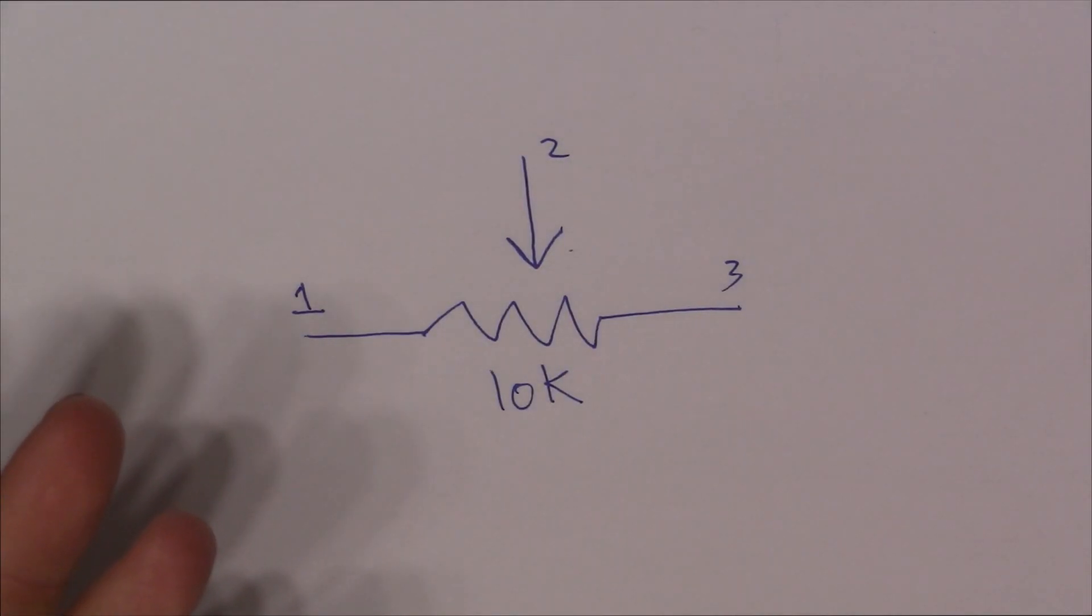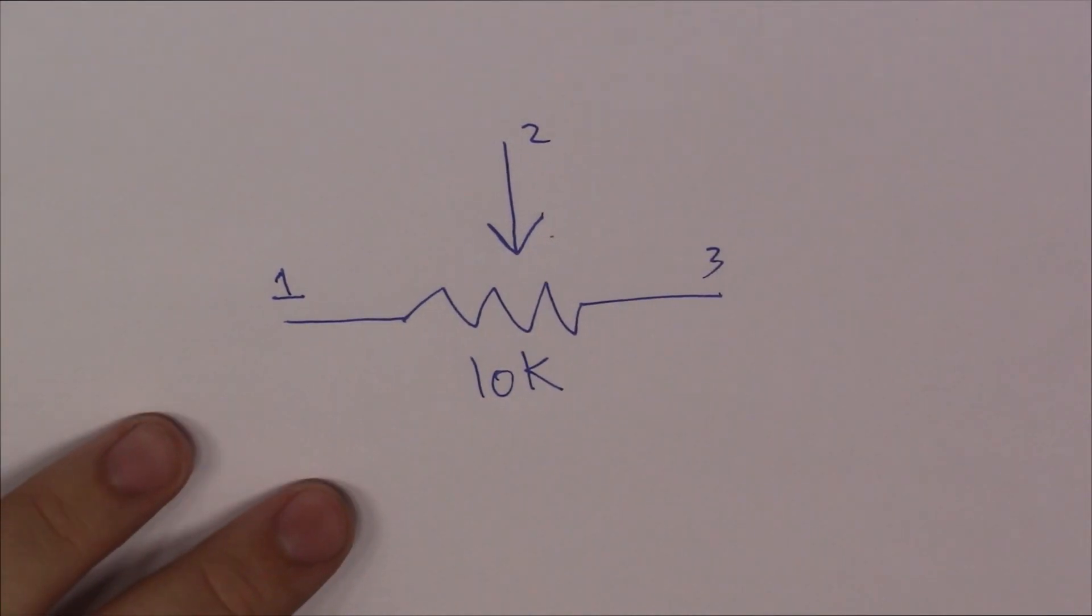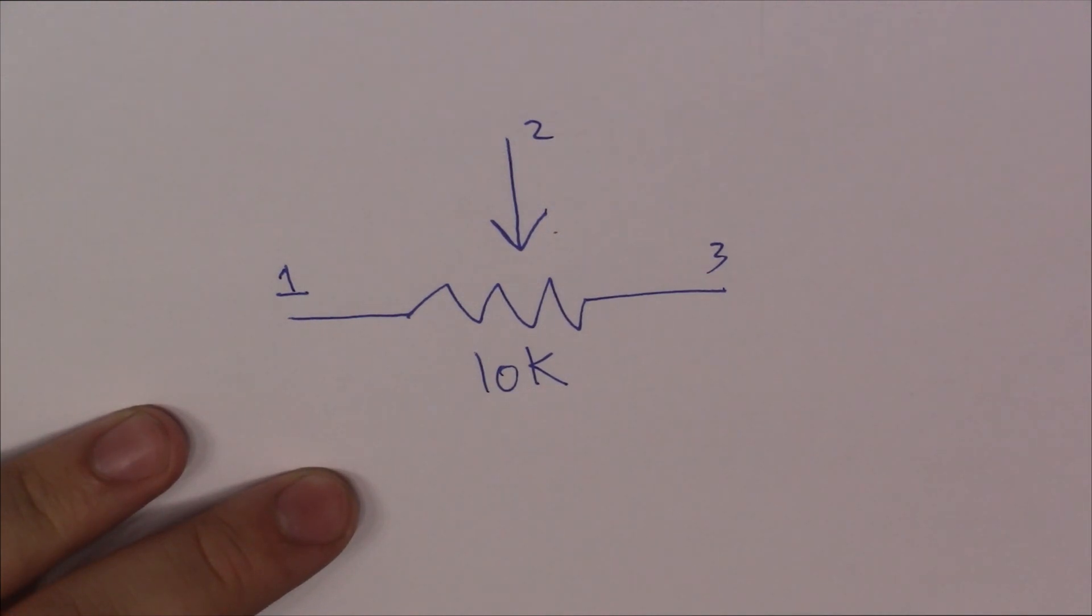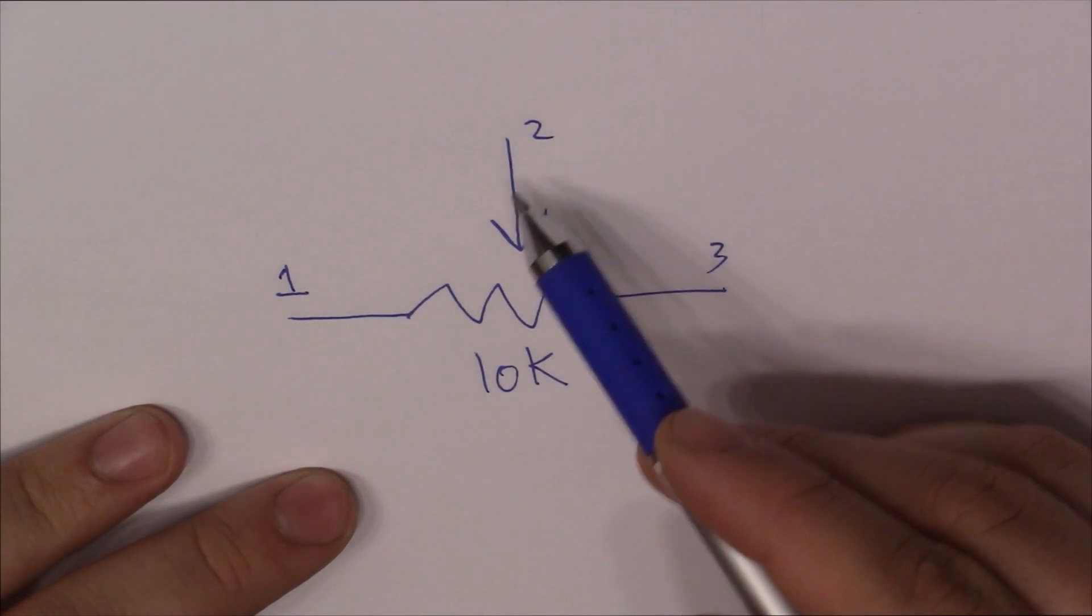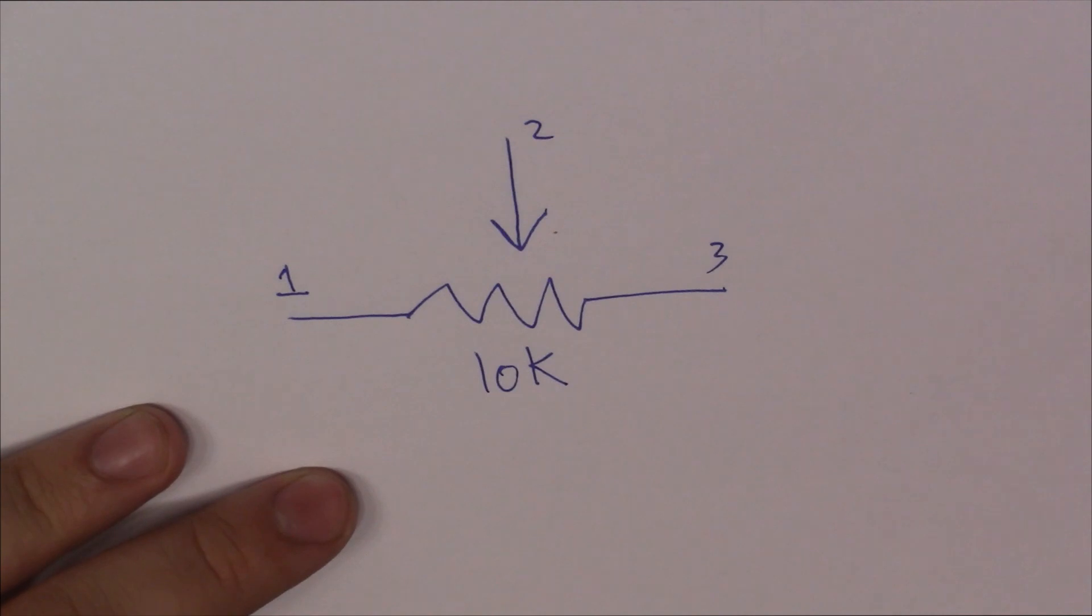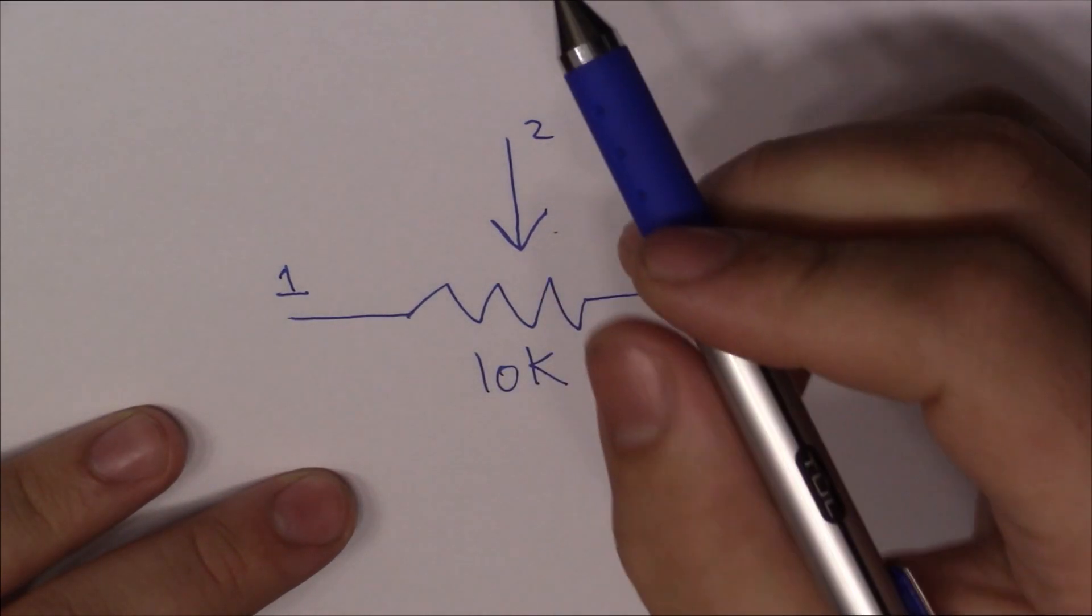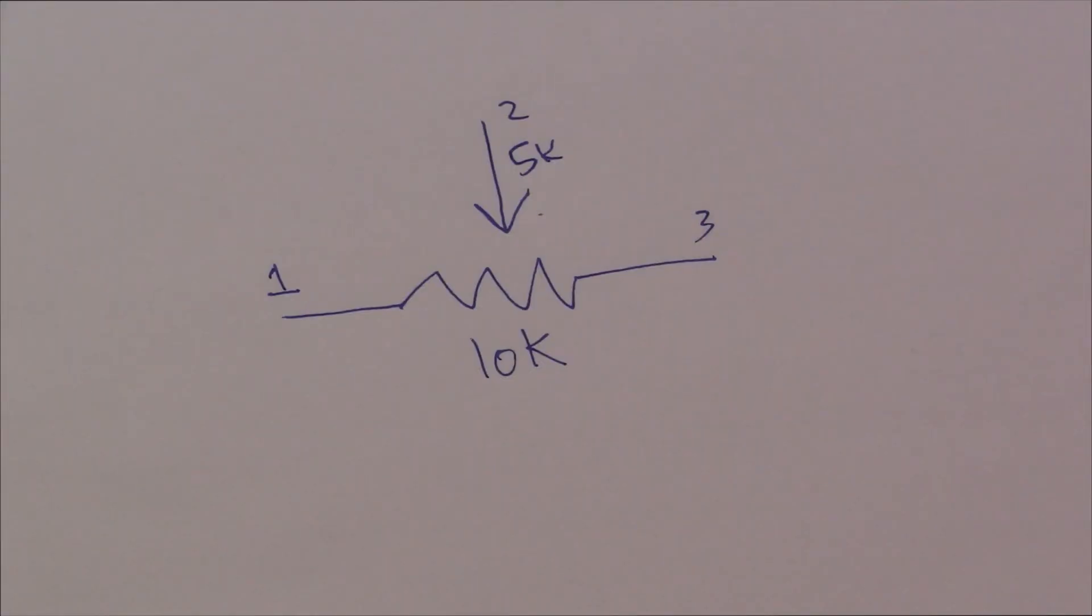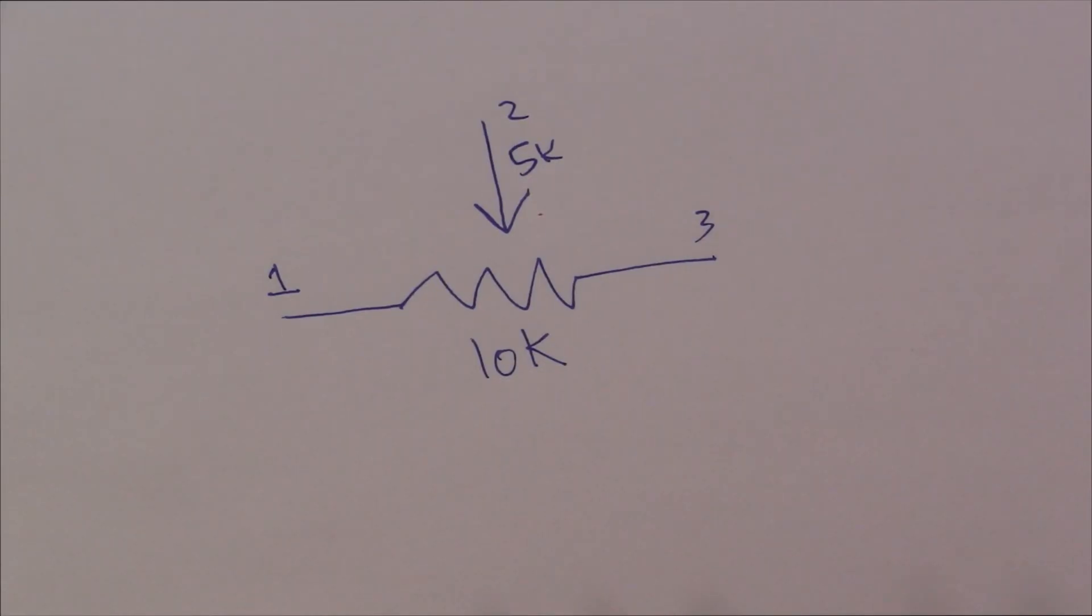Now that we know what a potentiometer is, we can understand how stick drift works. If the overall resistance from one to three is 10k, it's right to assume that the resistance from two to one or two to three when the analog stick isn't being touched should be 5k from two to one and two to three. Of course this is best case scenario, and when it comes to stick drift these are the values you won't see.